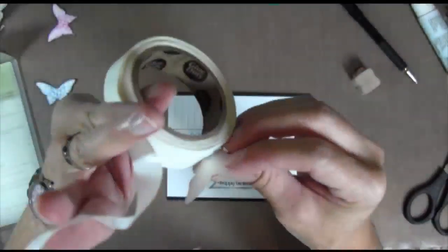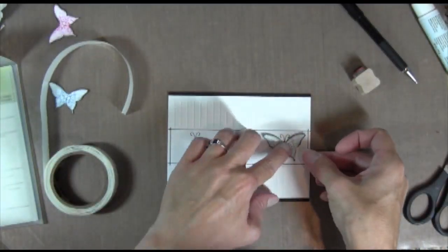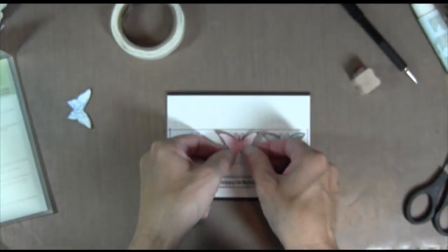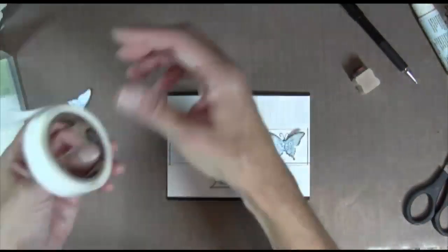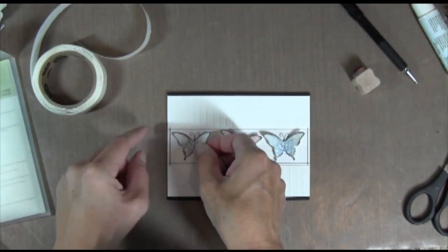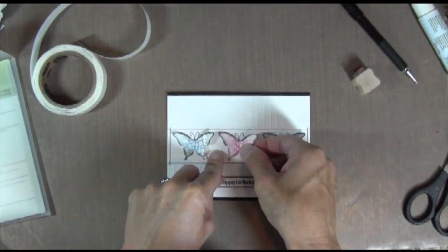And then finally I'm going to adhere my butterflies with some mini glue dots so you just kind of bend the middle a little bit and then you press it against the glue dot and it'll stick to your butterfly and then you stick it right down on the paper and then the wings can fly up.